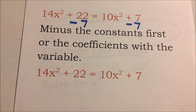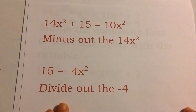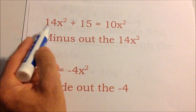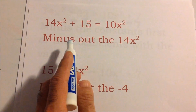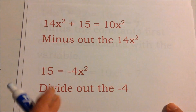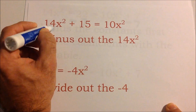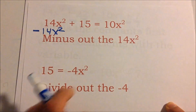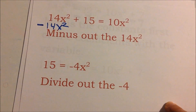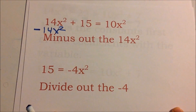After subtracting 7 from both sides, this is what we're left with. Now we want to get x squared alone. I'll subtract 14x squared — if I had subtracted the 10x squared I'd get zero on that side, which we don't want. So subtract 14x squared from both sides.